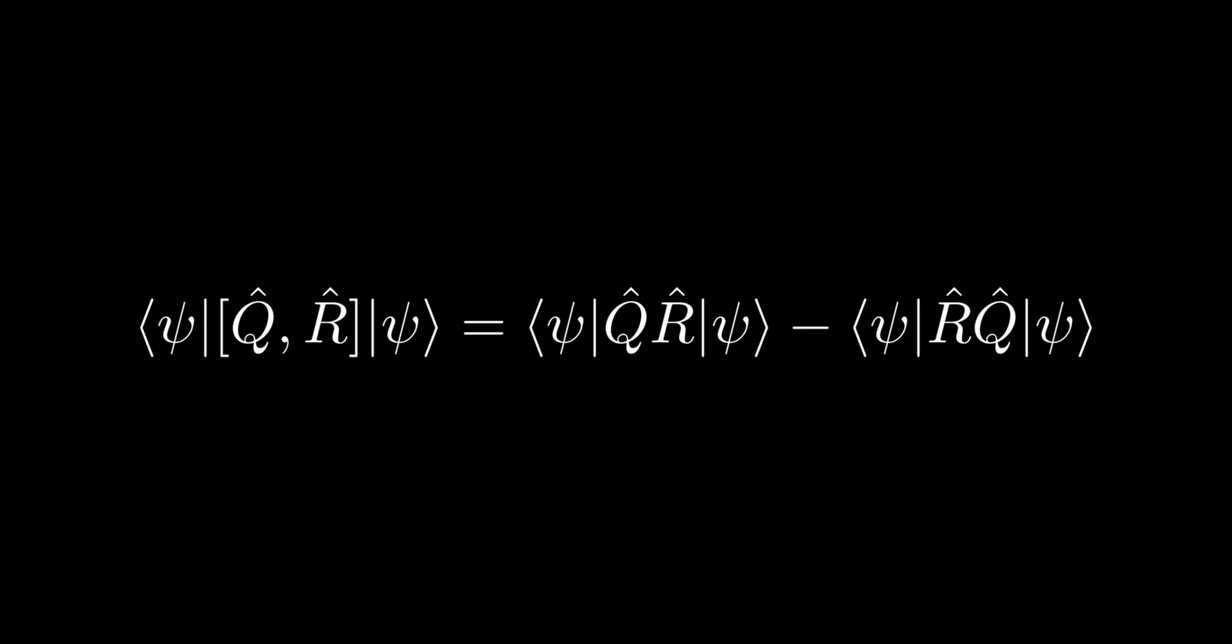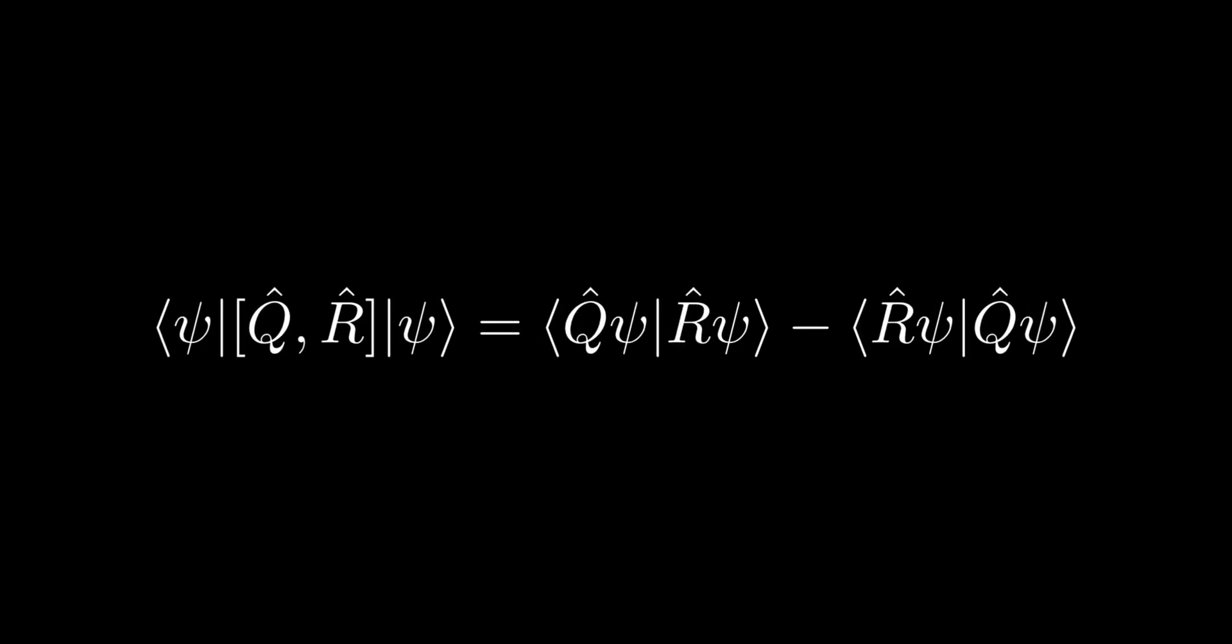Then by noting both Q and R are Hermitian operators, we can move Q in the first term to the left argument and we can move R in the second term on the right to the left argument.